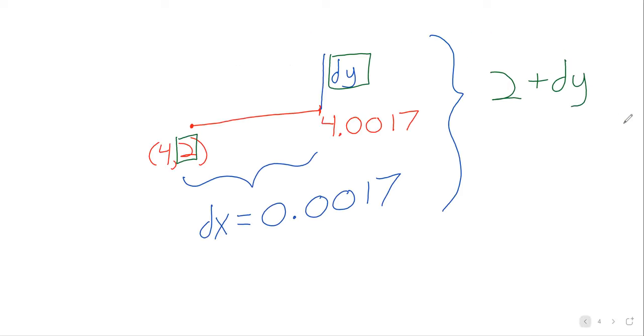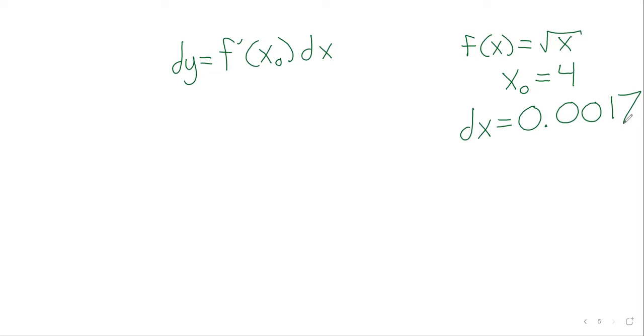So dy equals f prime of x zero dx. In the particular case where f of x is the square root of x, x sub zero is four, and dx is 0.0017. And at this point you're basically plugging and chugging.